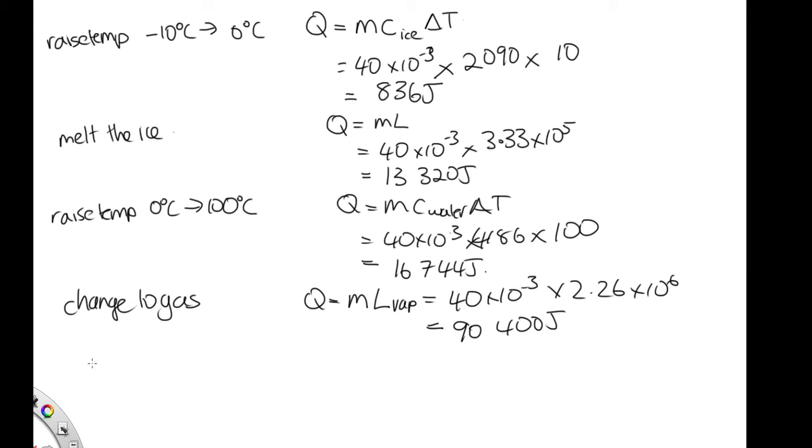Then we have to change the temperature of the steam, raising it from 100°C to 110°C. Q equals mass times the heat capacity of steam times the change in temperature. That's 40 times 10 to the minus 3 times 2010 times 10 degrees, which gives us 804 joules.